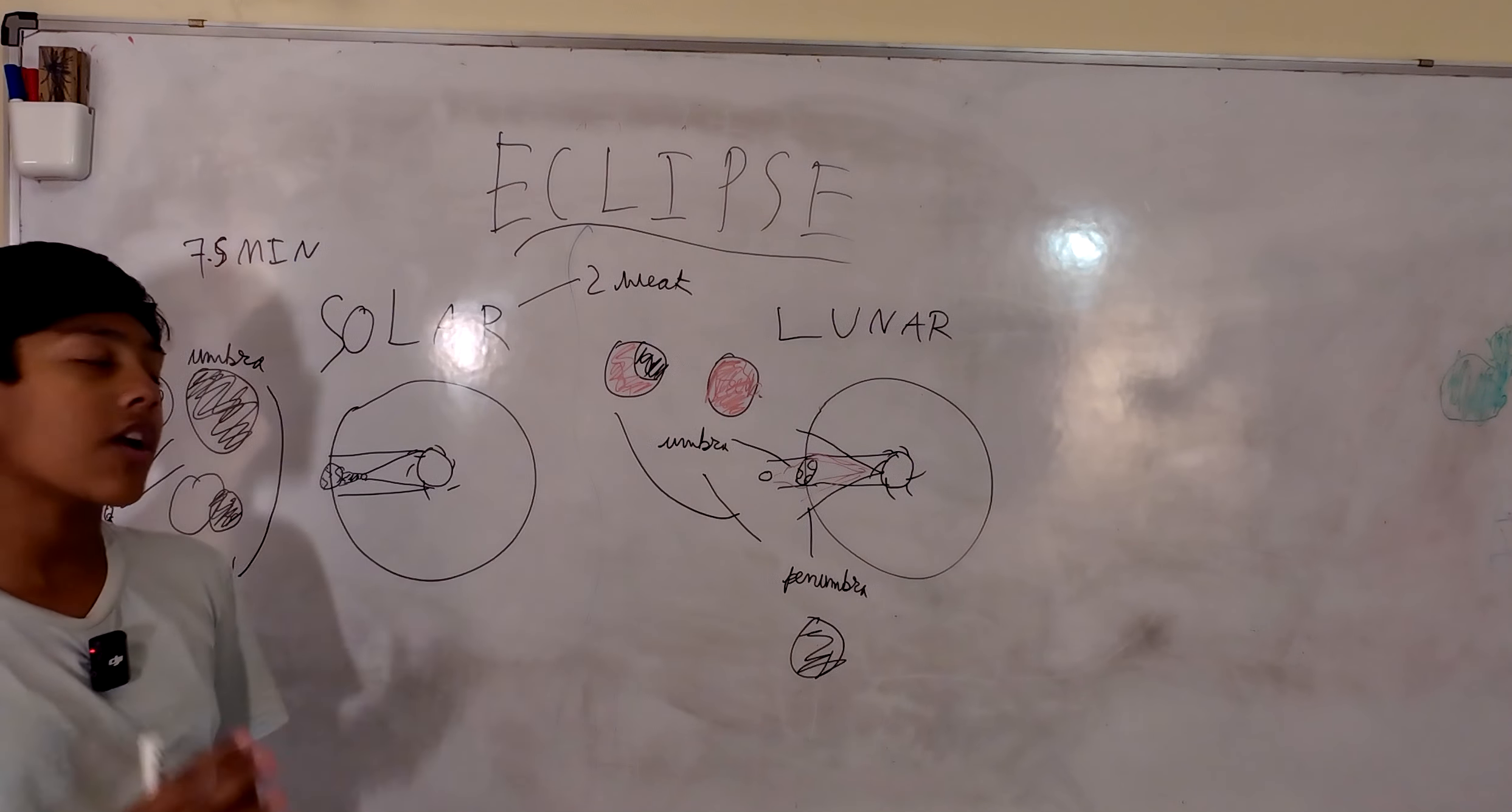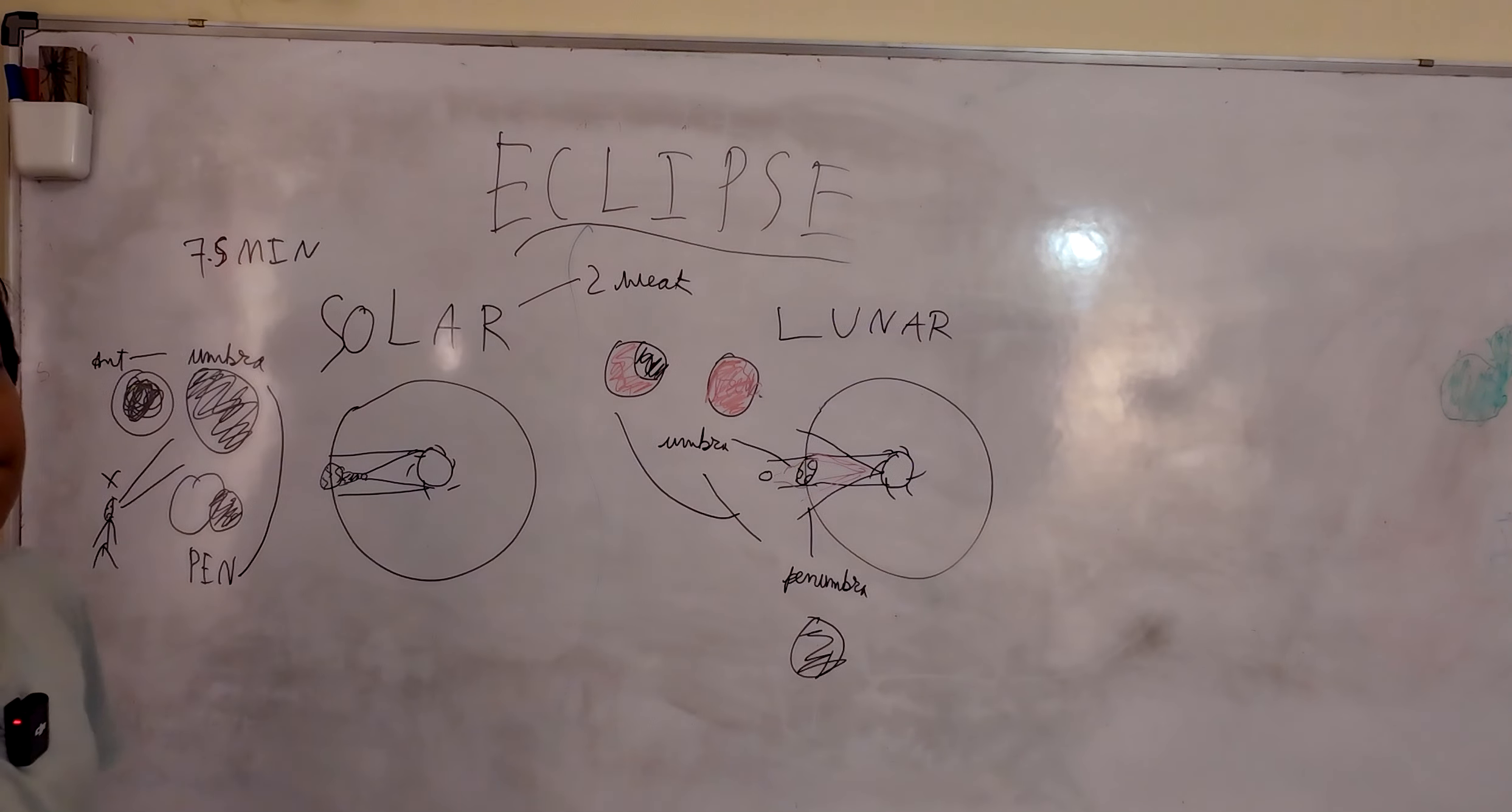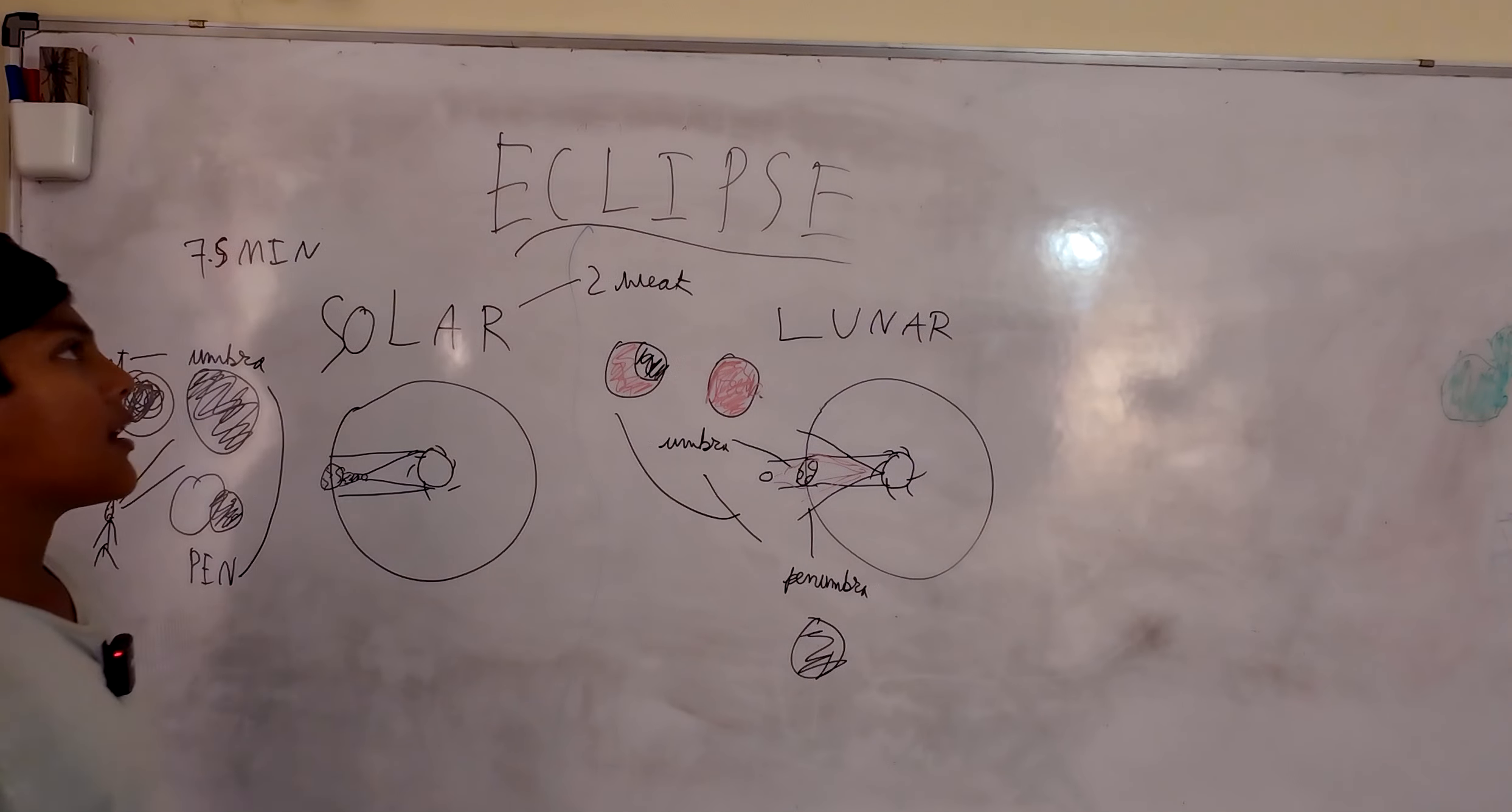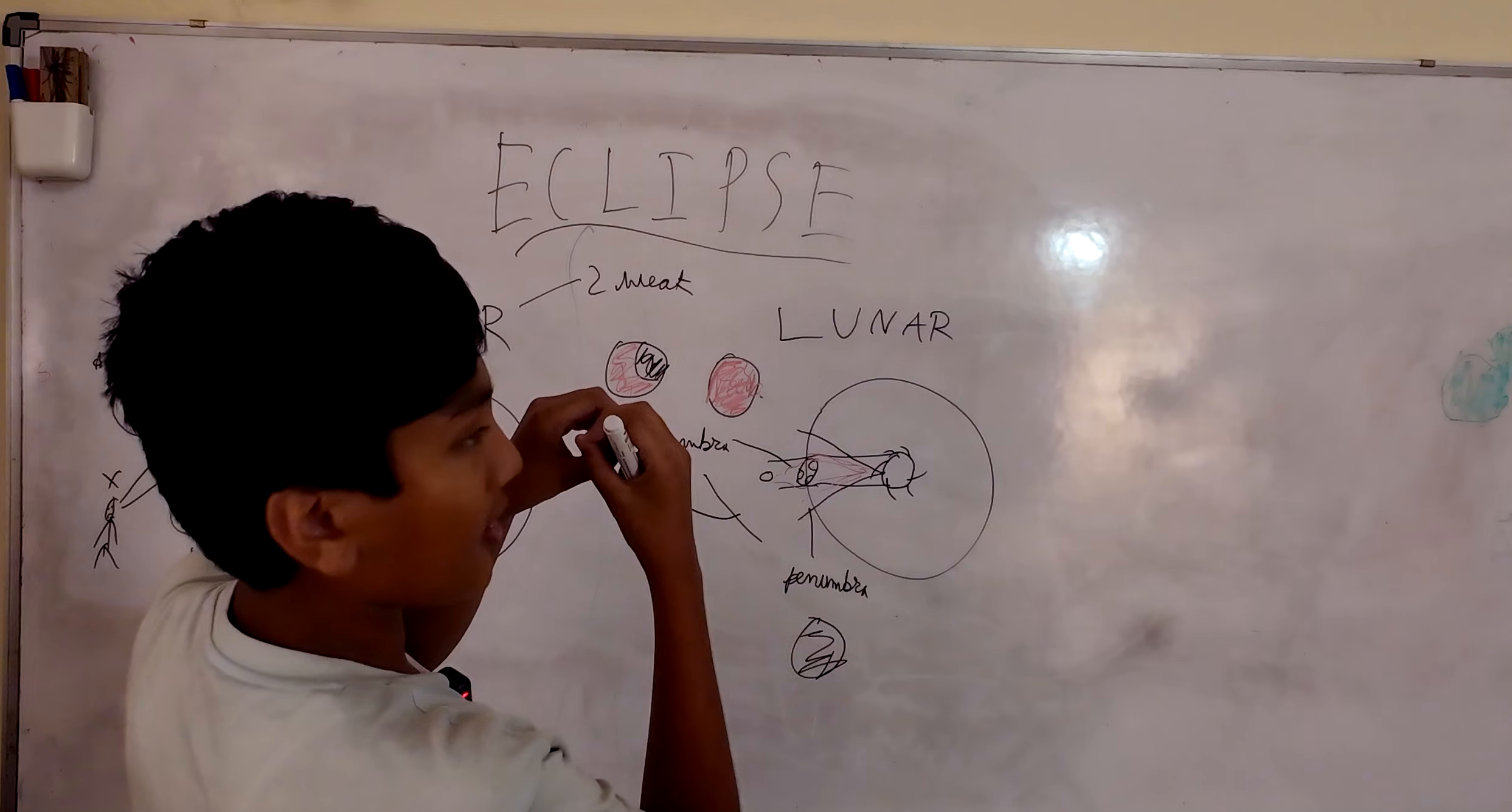There are three types of solar eclipses. The first one being the penumbra. It basically shows the moon partially covering the sun.